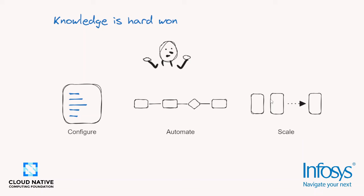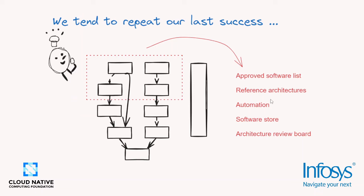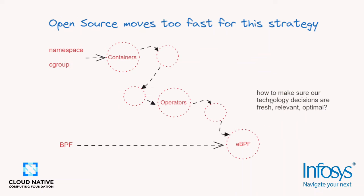What we do is we tend to document these experiences in terms of best practices — we take what works and repeat that. This can be in the form of a reference architecture or maintaining a list of approved software products known to work well together. Every organization does this. However, my hypothesis for today's webinar is that open source moves a bit too fast for this strategy.